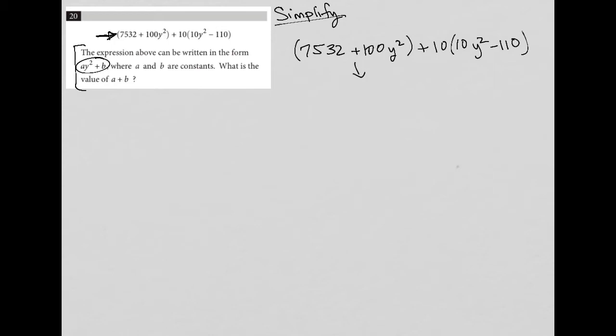I'm going to just rewrite what's inside this set of parentheses because there's nothing I can simplify there. So let's call this 7532 + 100y². Now here I can distribute the 10 across. So I'm going to do that. 10 times 10y² is 100y². And then 10 times -110.